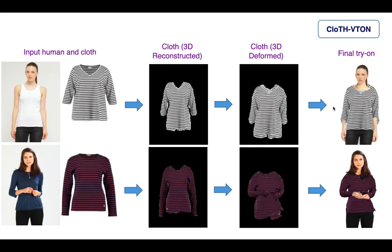We propose a novel hybrid approach for image-based virtual try-on to generate try-on results with the highest quality. We reconstruct 3D cloth models from single images and apply 3D deformation, then use it in the image-based virtual try-on.